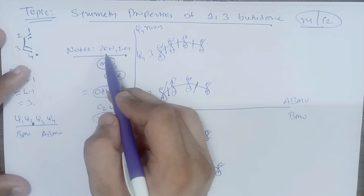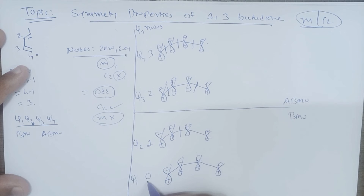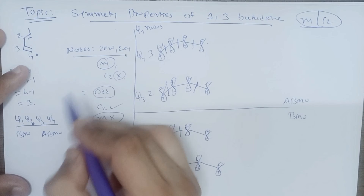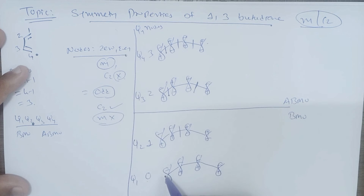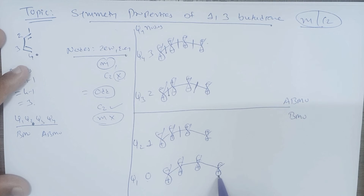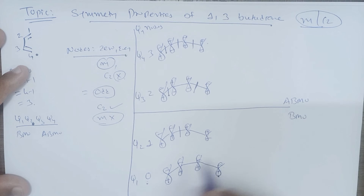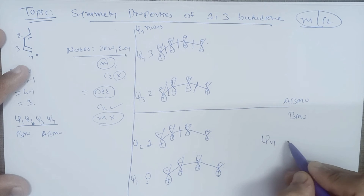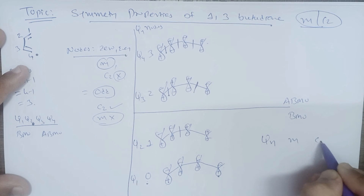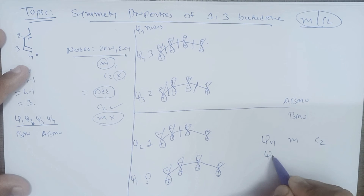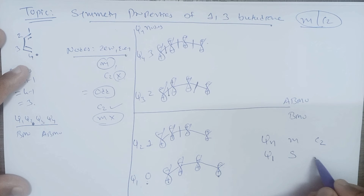Let us verify this rule one by one. For psi 1, when we are having 0 nodes, if we compare the first loop to the last loop and put a mirror plane in the center, the minus sign will reflect as minus and the plus sign will reflect as plus. So psi 1 is symmetric for the mirror plane and asymmetric for the C2 axis.